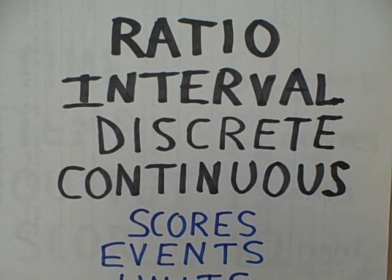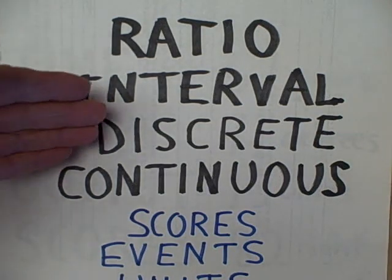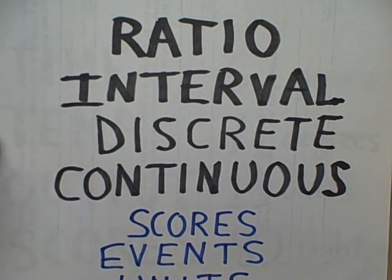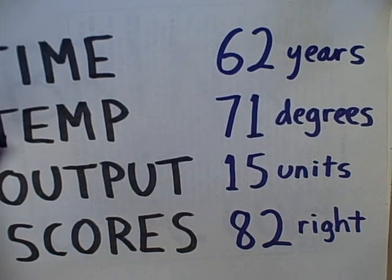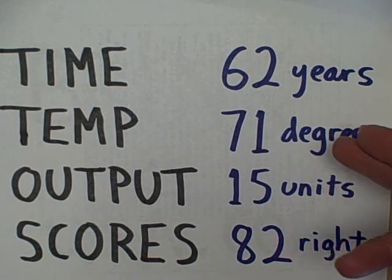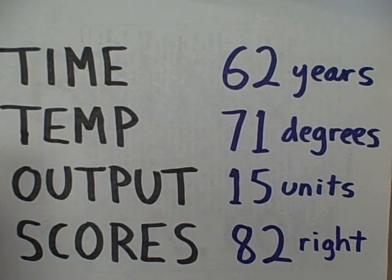Then we come to numerical scaling. Perhaps in your statistics class you learned this as ratio or interval scaling, and you learned to distinguish between discrete and continuous numbers. The good news is that for the statistics laboratory, you don't have to maintain all these distinctions — you just have to know when you're dealing with any of these kinds of scales, because they all use the same statistical techniques. Whenever you have scores, events, or units, we're dealing with ratio or interval scaling. Examples include measuring time such as 62 years old or 25 seconds, temperature such as 71 degrees Fahrenheit, the output of a worker such as 15 units, or scores on a test like 82 right — any of these are numerical, and you're dealing with ratio or interval scaling.